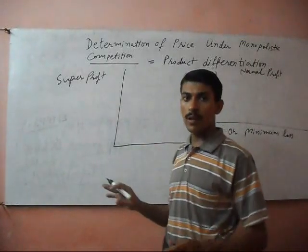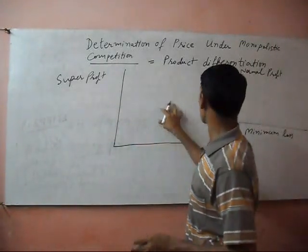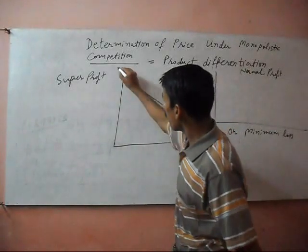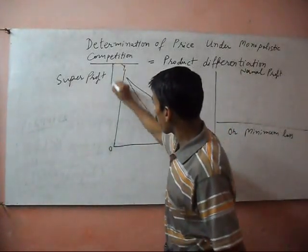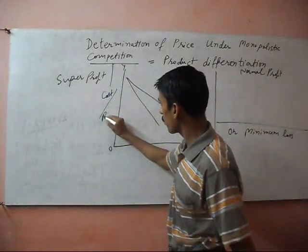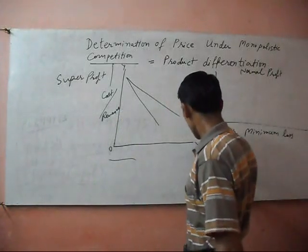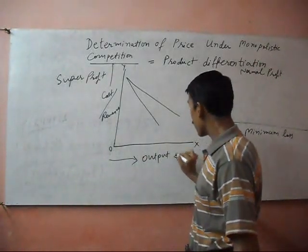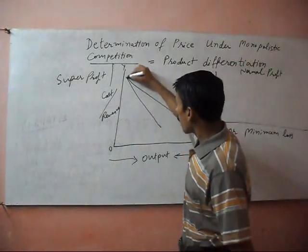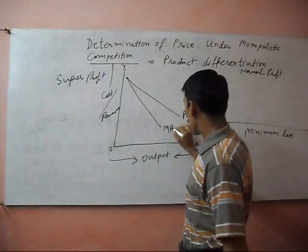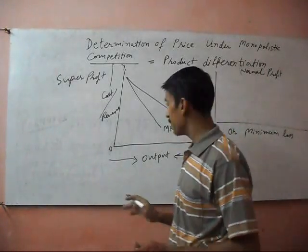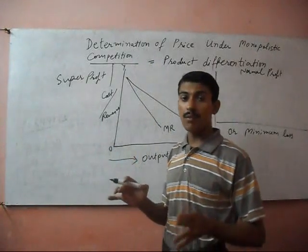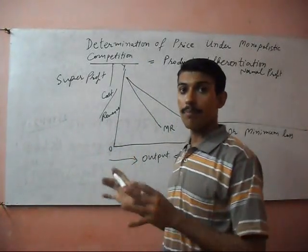First of all, we will determine the price in the monopolistic competition. Y-axis is cost and revenue and X-axis is output. Average revenue and marginal revenue will be different. In monopolistic competition they are not equal because the vendor or seller will fix his own price.